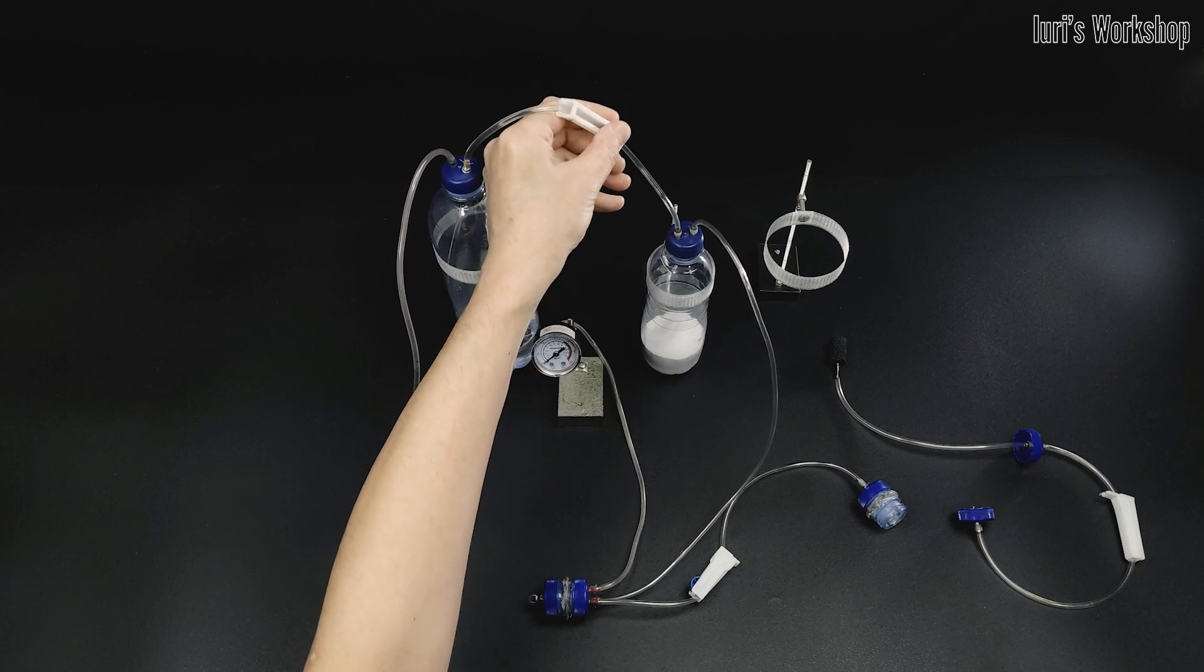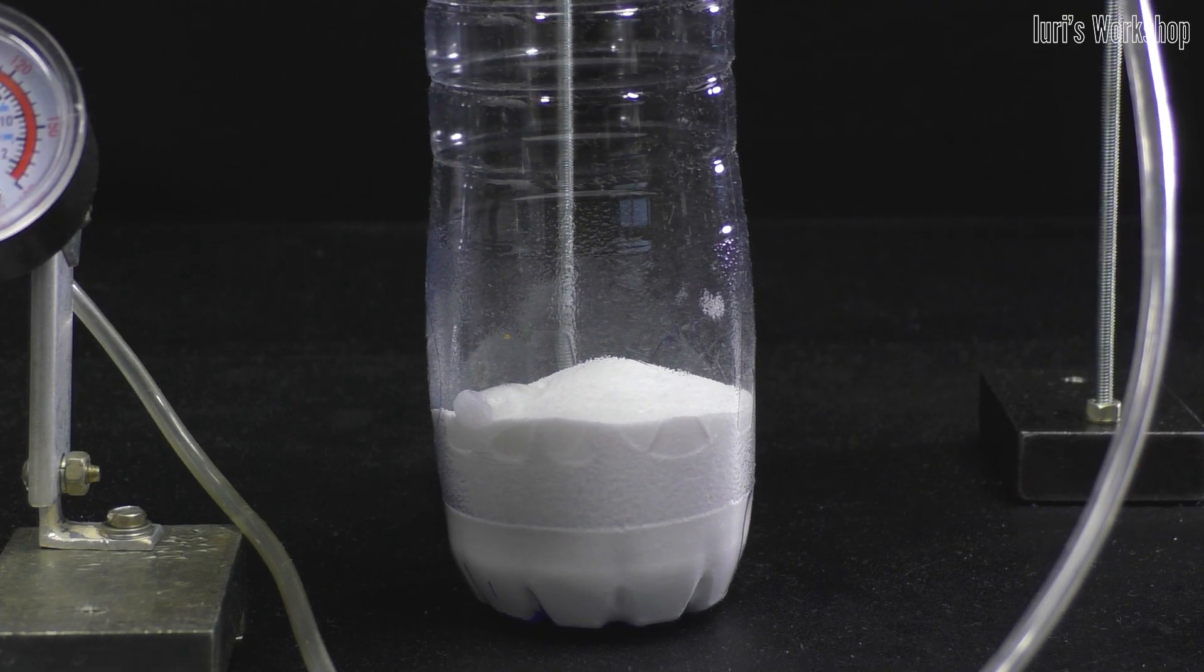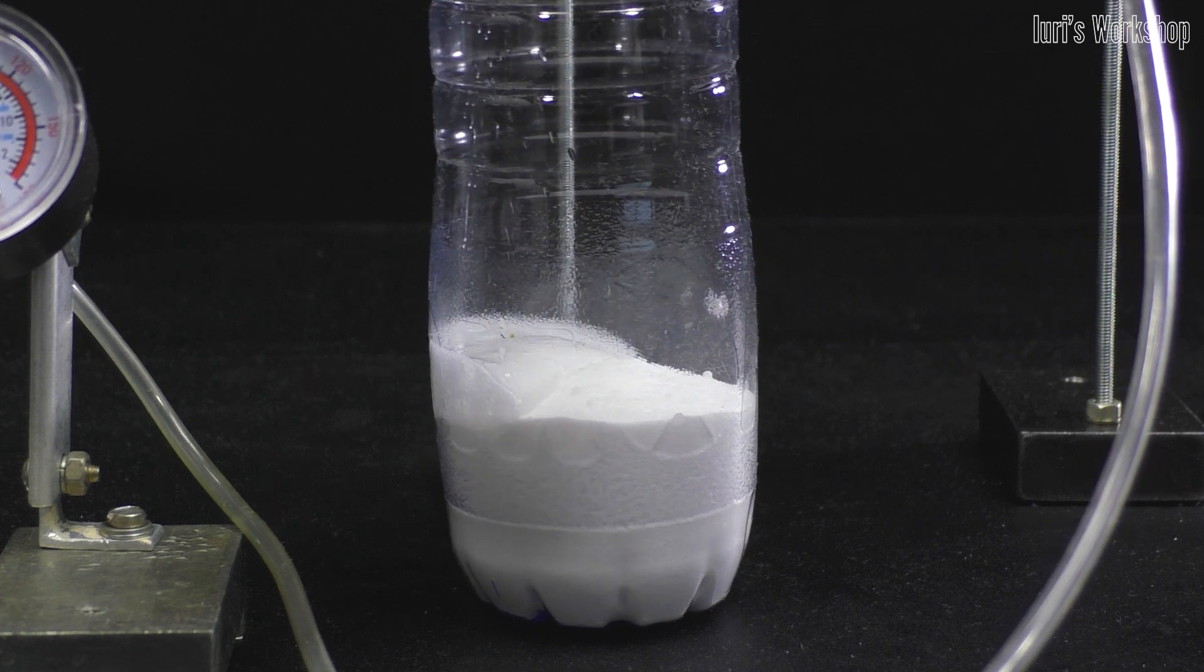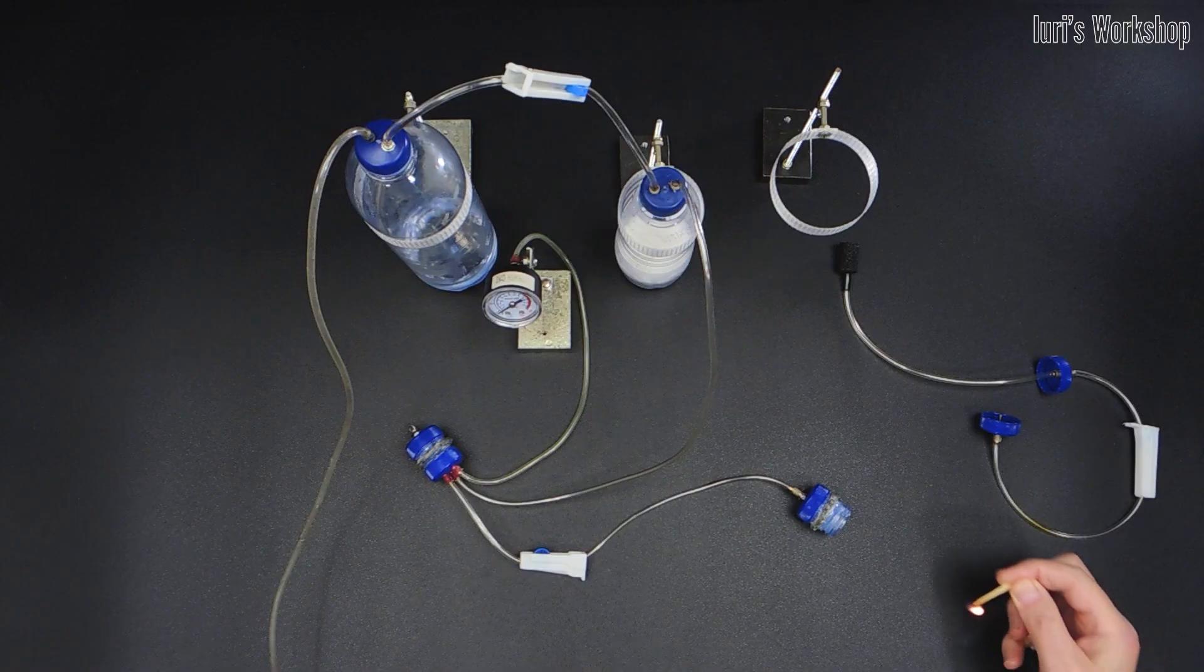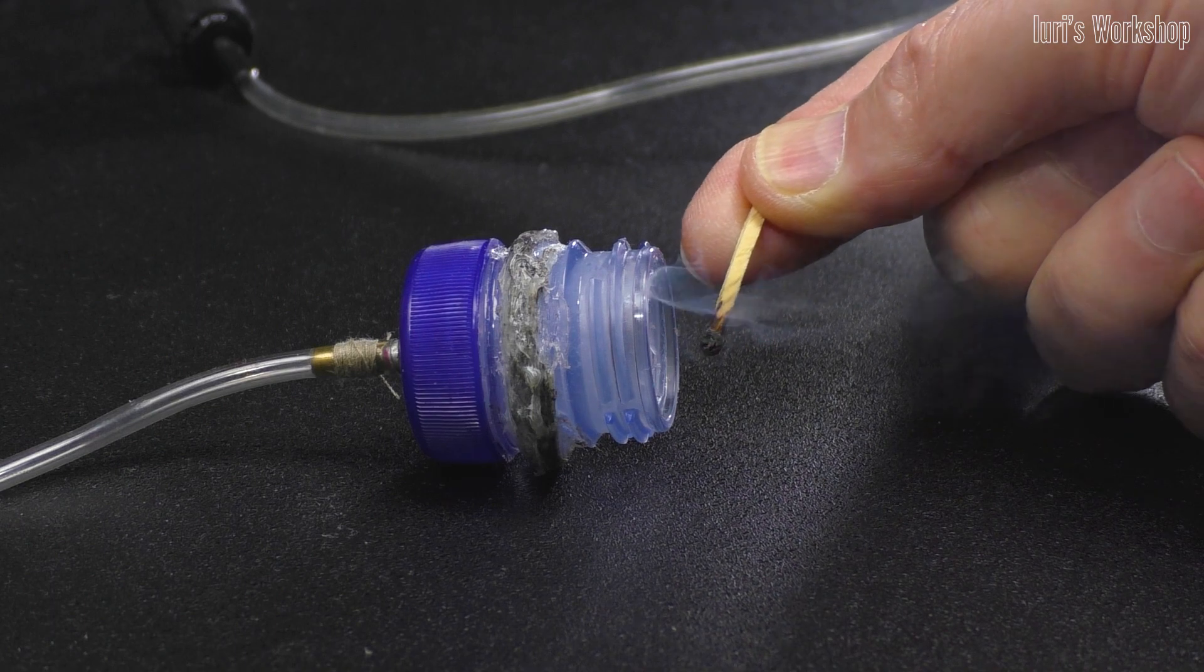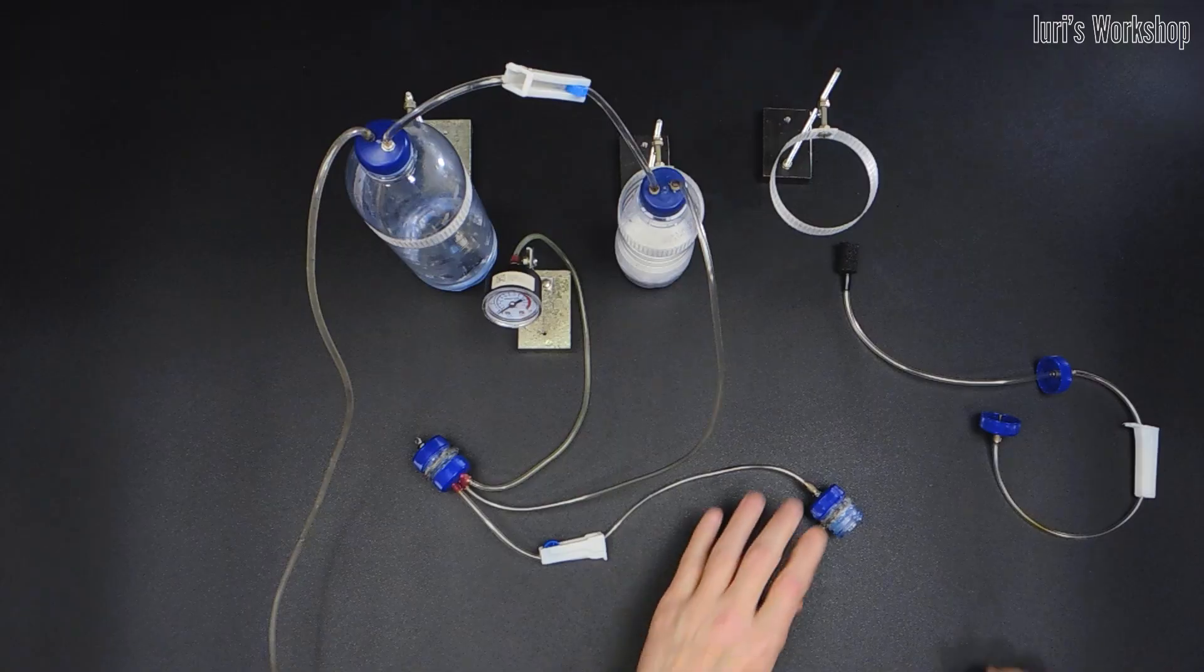If we now open the valve between the first and the second tank, the acetic acid will flow under air pressure into tank number 2 and mix with the baking soda. The chemical reaction will produce carbon dioxide.